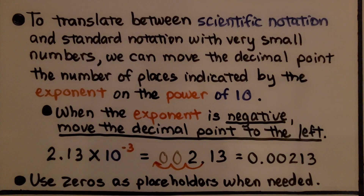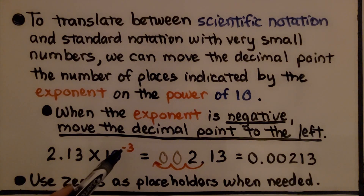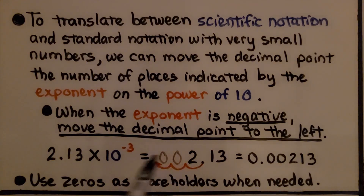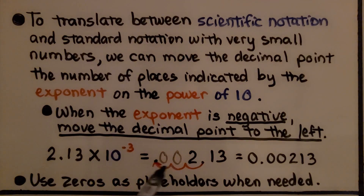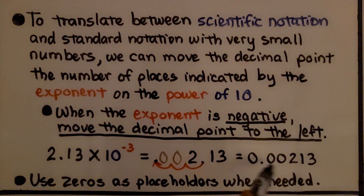When the exponent is negative, move the decimal point to the left. Here we have 2 and 13 hundredths times 10 raised to the negative third power. We're going to move this decimal point to the left three jumps — one, two, three — placing it right there. So we have two zeros on the right side of the decimal point and then the two. We put a zero in the ones place and use zeros as placeholders when needed.